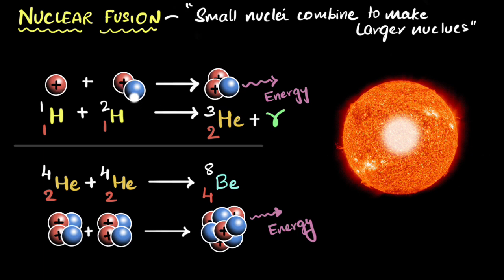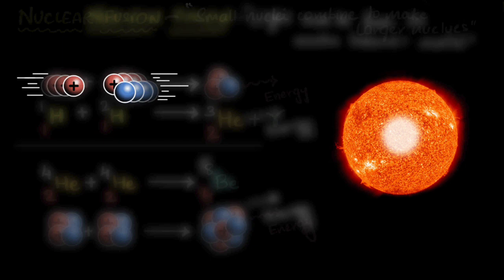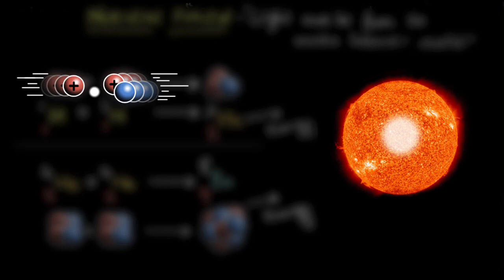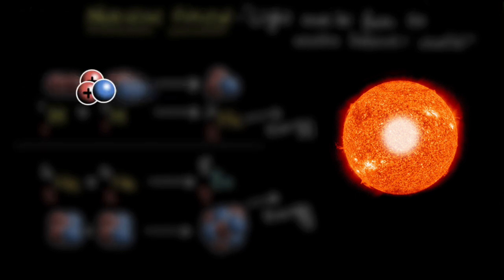If you want to fuse nuclei together, you need to first of all, pack them very tightly and make sure they have incredibly high speeds so that they can overcome that repulsion, come close enough to be within the nuclear range. And then finally, if they're that close, then the nuclear force can take over and fuse them together.